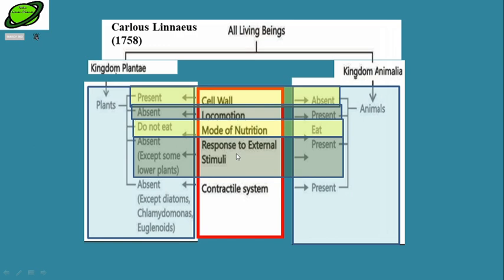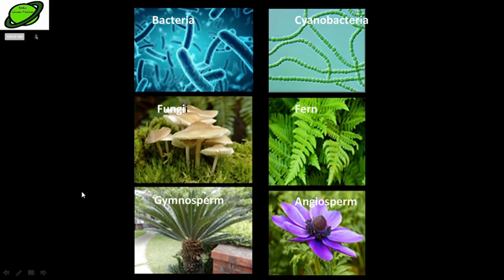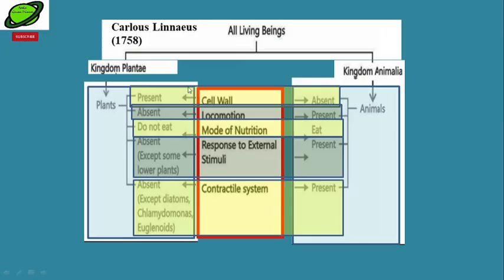According to Linnaeus, response to external stimuli like heat or touch was absent in plants but present in animals. The contractile system is considered absent in plants, so all organisms without a contractile system were classified as plants, and those with one as animals. Now let us figure out how we would classify bacteria, cyanobacteria, fungus, fern, gymnosperm, and angiosperm according to Linnaeus.